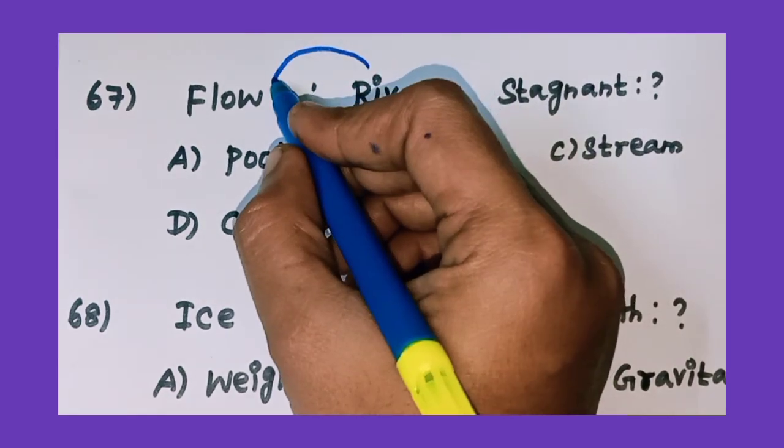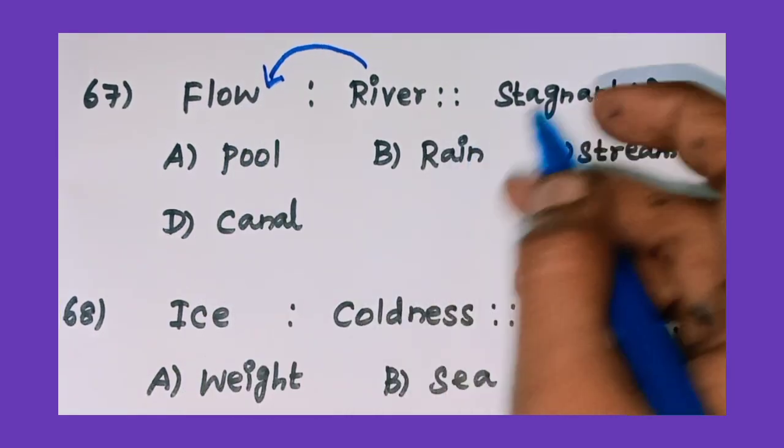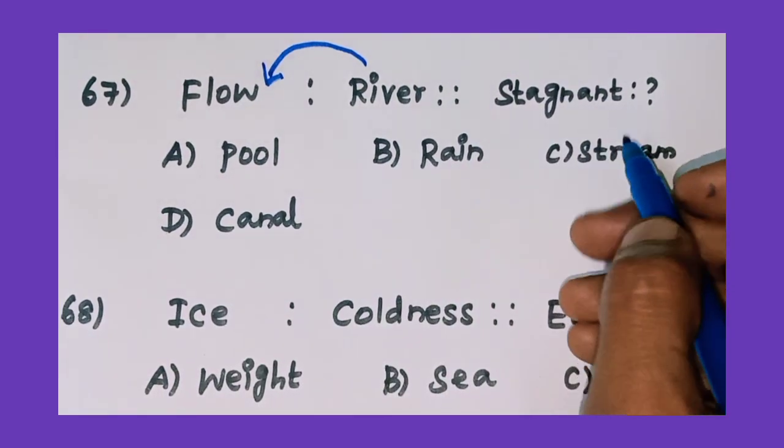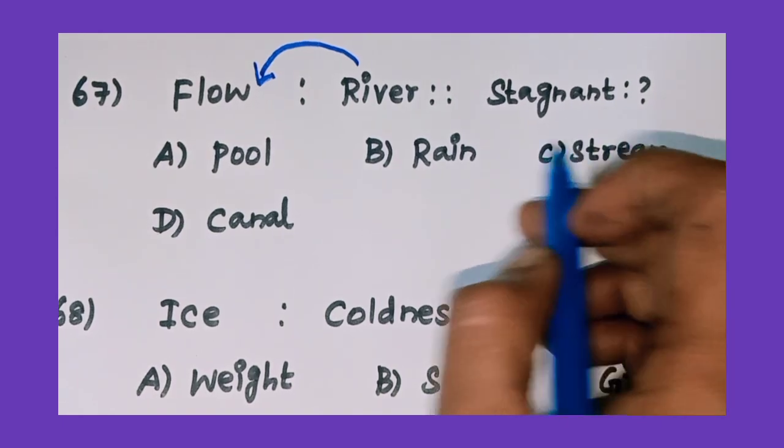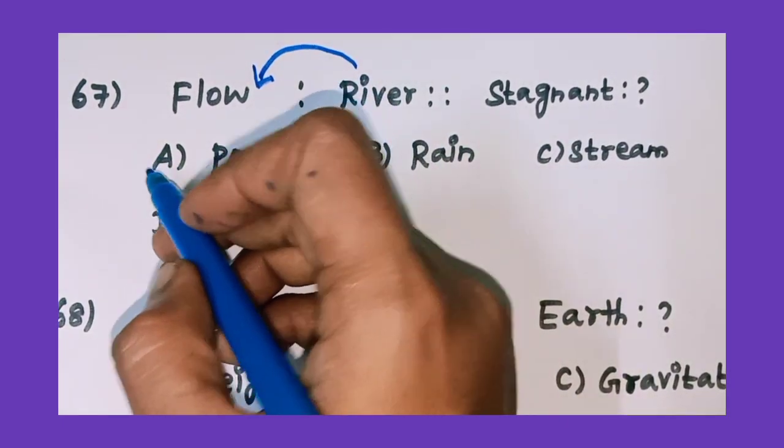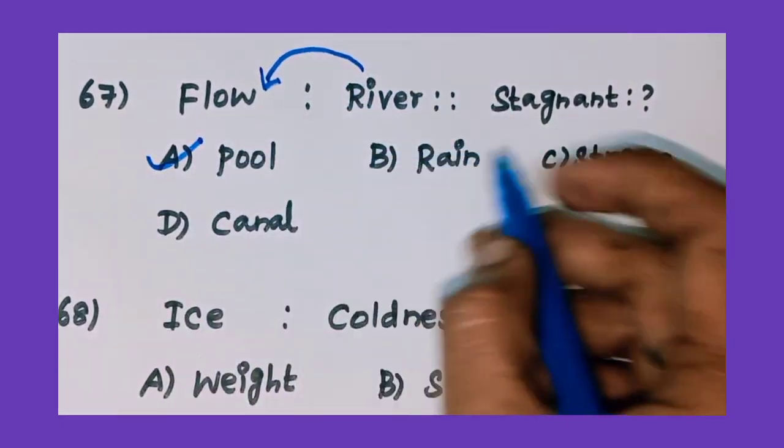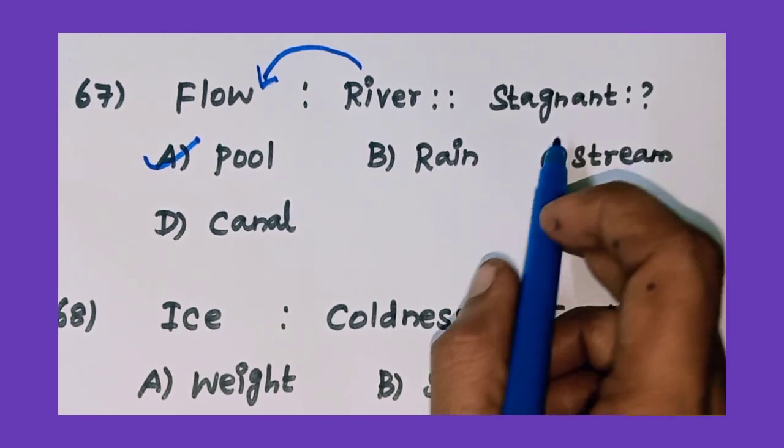The river is related to flow, and stagnant is related to option A: pool. Option A, pool. Stagnant means still water, so pool.